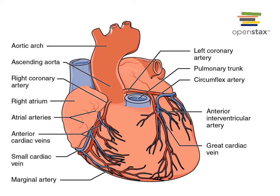The left coronary artery travels in the coronary sulcus and branches into two major arteries: the circumflex artery, which continues in the coronary sulcus curving around toward the posterior of the heart, and the anterior interventricular artery, which travels inferiorly through the anterior interventricular sulcus. The anterior interventricular artery is also known as the left anterior descending artery, commonly abbreviated LAD.